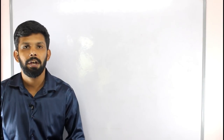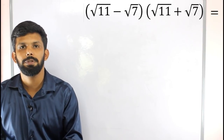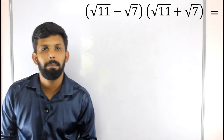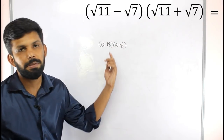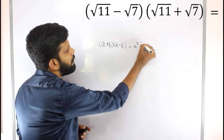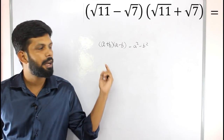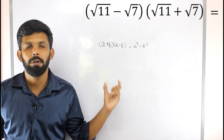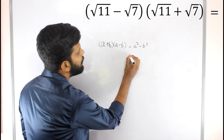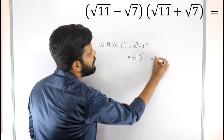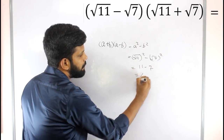Let's take a look at: root 11 minus root 7 into root 11 plus root 7 — how much is the value? Now we have the form a plus b into a minus b, which gives a squared minus b squared. Here a is root 11 and b is root 7, so the answer is 11 minus 7, which is 4.